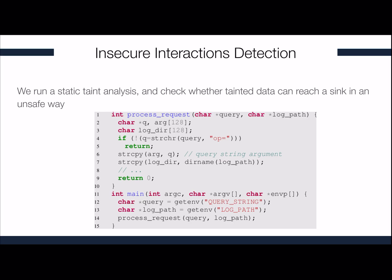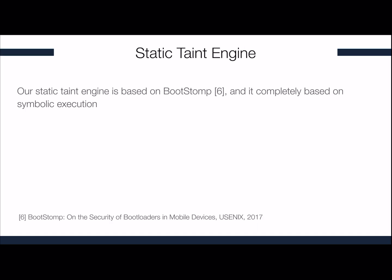Continuing with our example, query now contains tainted data and tainted data is passed to the function process_request. In this function, a memcopy-like function is called using tainted data in an unsafe way, and as such we generate an alert. Our taint engine is based on Bootstomp, which is based on symbolic execution.